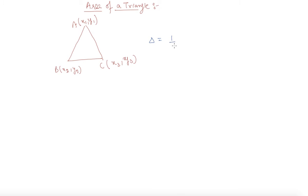So the formula to find out the area is determinant half of x1, y1. I will write the first coordinates in this row: x1, y1, 1, x2, y2, 1, again x3, y3, 1. So this is how students we can directly find out the area of a triangle using this formula.